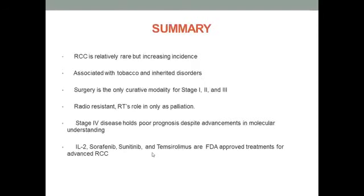In summary, RCC is associated with tobacco and many hereditary disorders like VHL syndrome. Surgery is the only curative treatment option for Stage 1, 2, and 3 disease. Radiation works only for palliation. Stage 4 disease has a poor prognosis, but newer targeted drugs like sorafenib, sunitinib, and temsirolimus — while approved — can hardly increase survival by months.